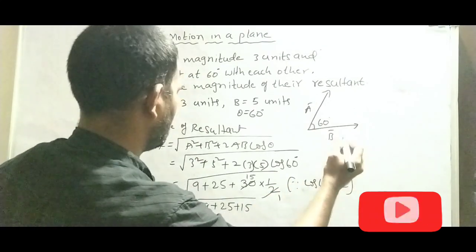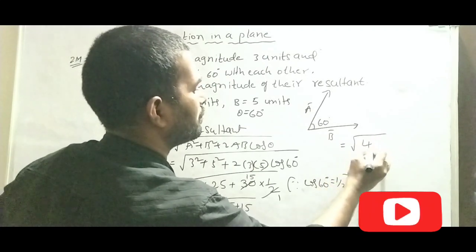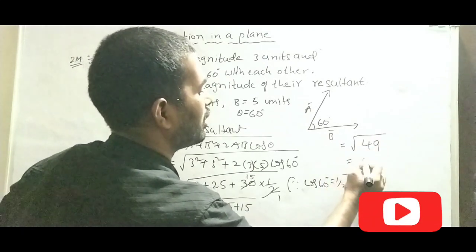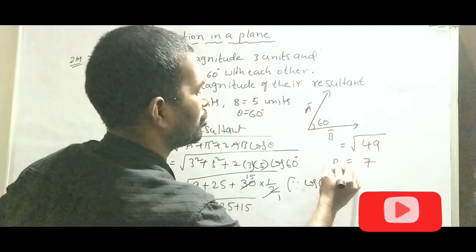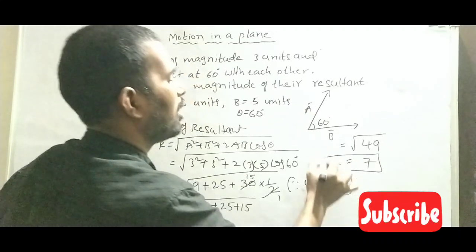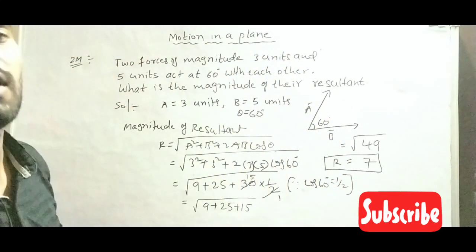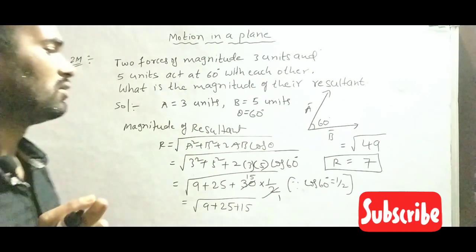Here I will write R equals under root of 49. Root 49 means 7 only. So resultant of vector R equals 7.